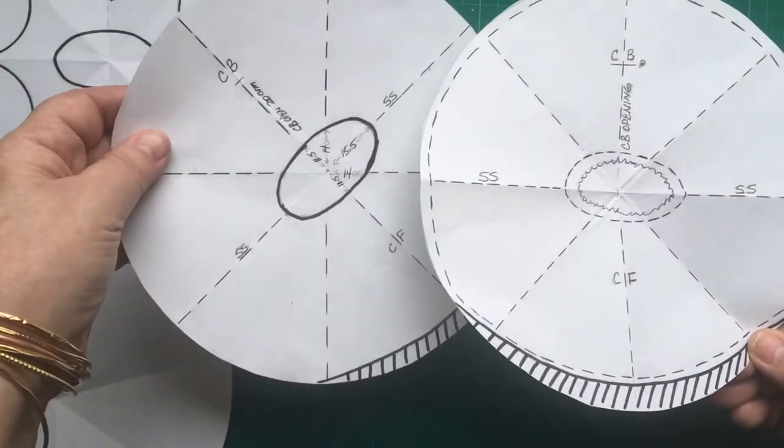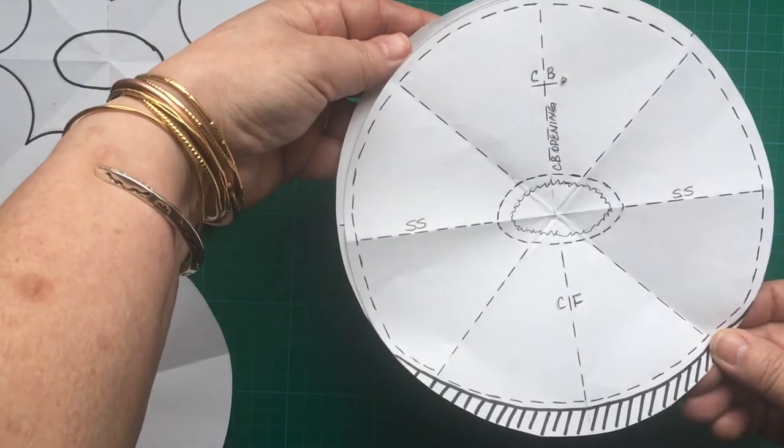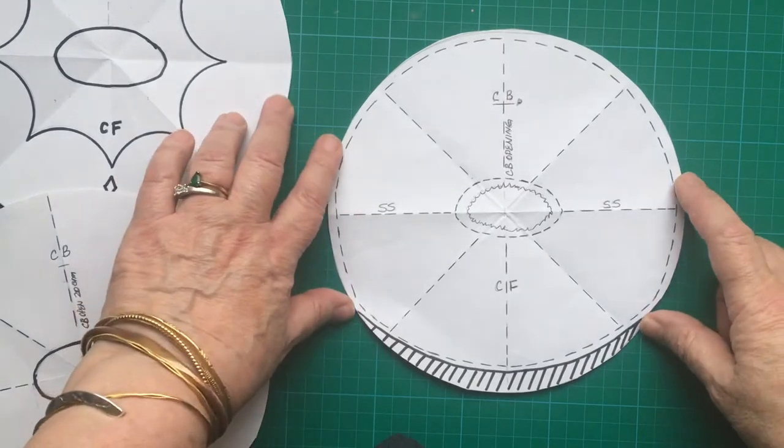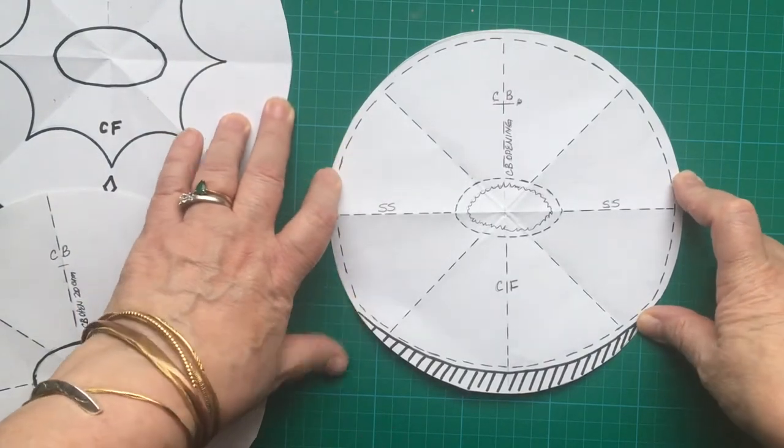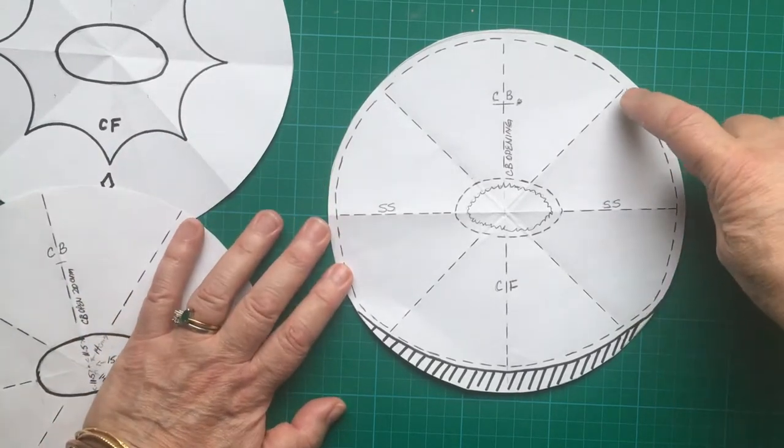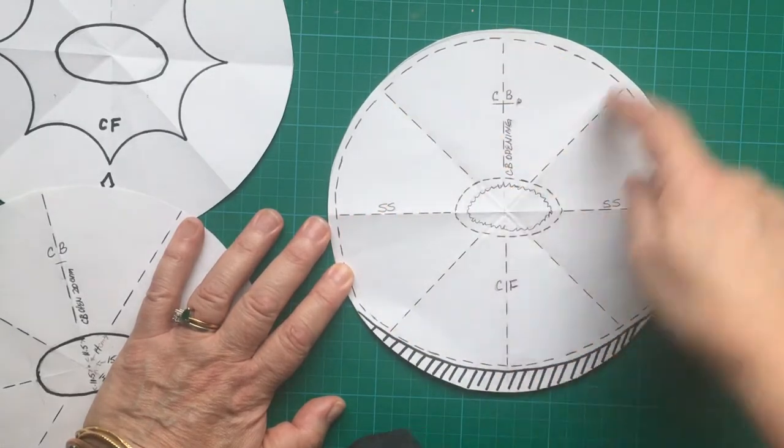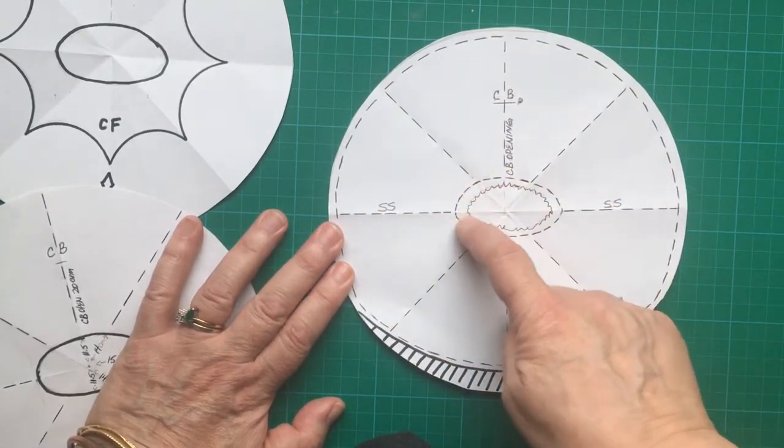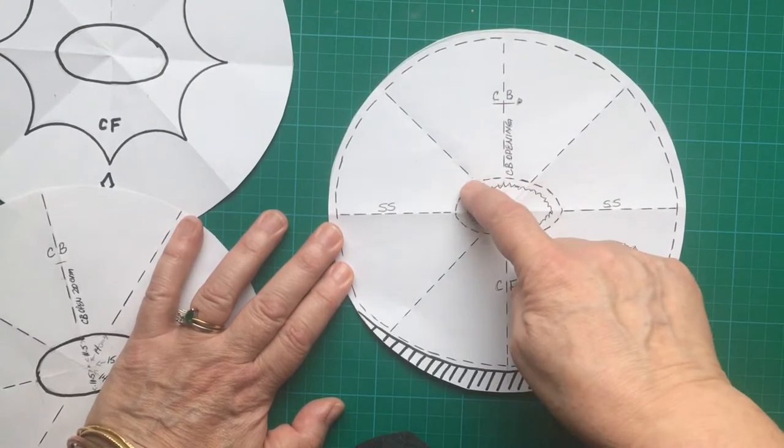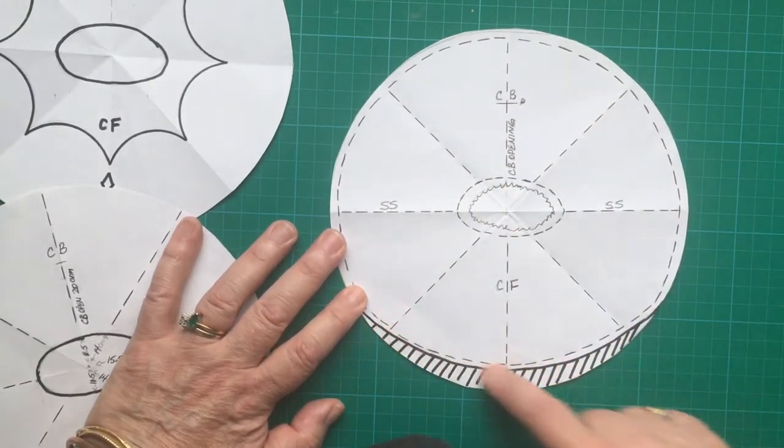If you put your pattern under the fabric you can see through and then you'll be able to thread mark everything. So with a single thread, just thread mark all these lines and thread mark around the body line there, the high hip line.